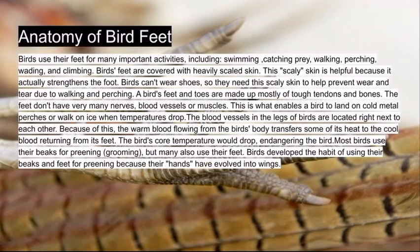The blood vessels in the legs of birds are located right next to each other. Because of this, the warm blood flowing from the bird's body transfers some of its heat to the cool blood returning from its feet. This helps the bird stay alive because if the warm blood didn't heat the cold blood, the bird's core temperature could be overwhelmed by cold blood from its feet, which would endanger the bird.